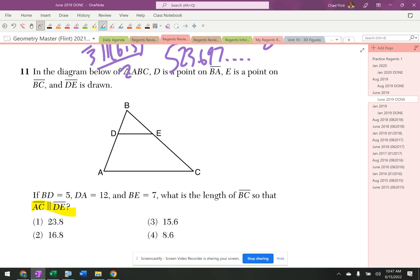So BD is five. Let's highlight this stuff. BD is five. DA is 12 and BE is seven.